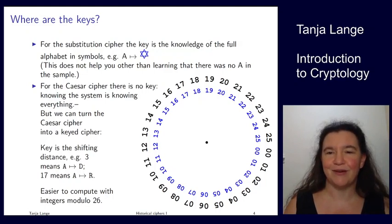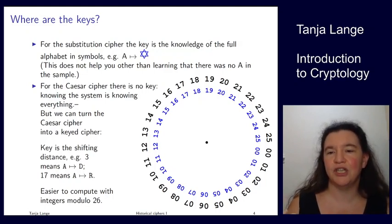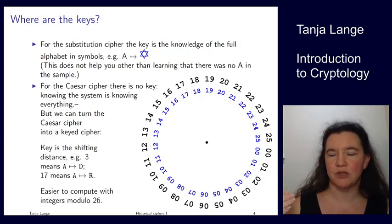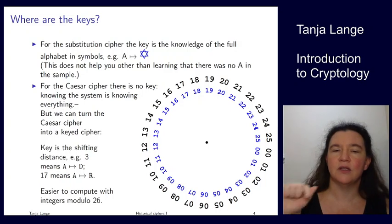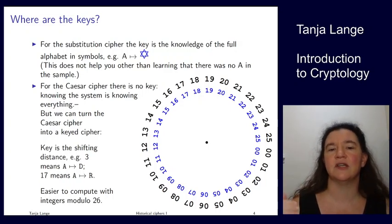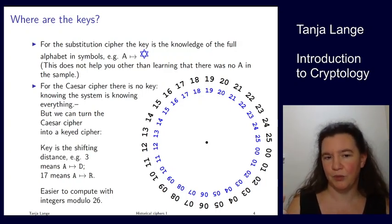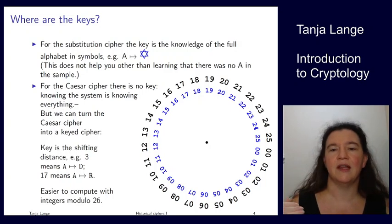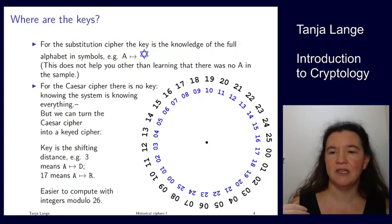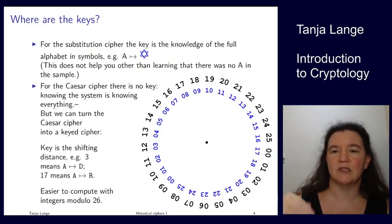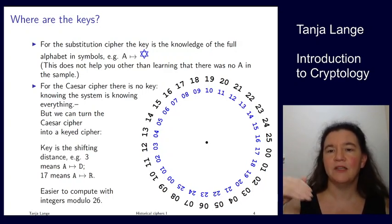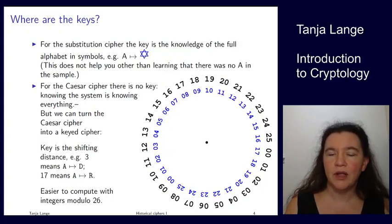Since we have some background in mathematics, and computers work easily with numbers, I translate A to 0, B to 1, and so on. This computation with shifts is just addition of integers modulo 26. So if I'm shifting by 17, I add 17 to each number. Starting from 24, for example, 24 maps to 15, because 24 plus 17 is 41, which is 15 more than 26.